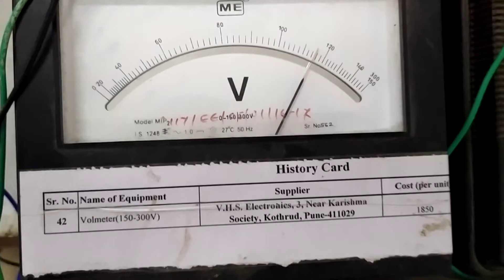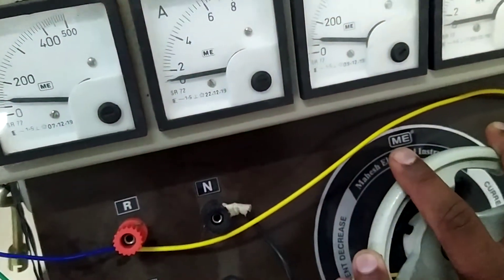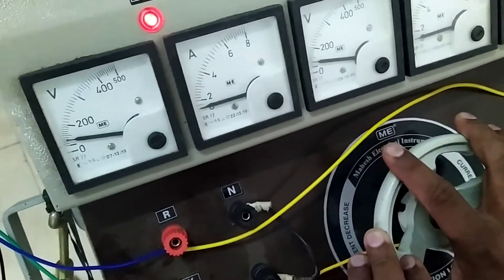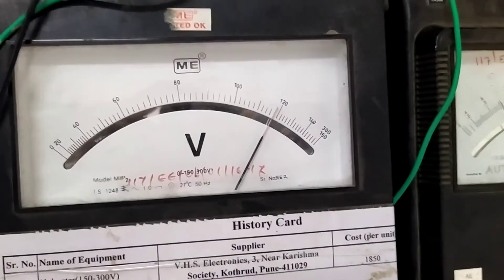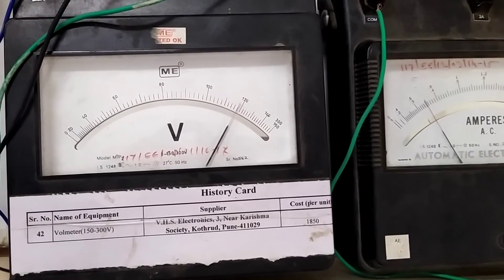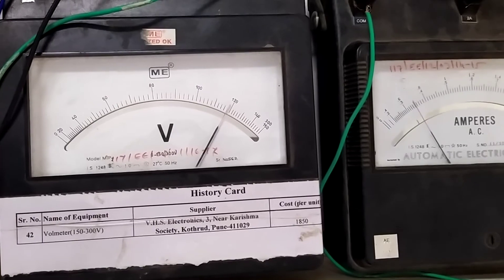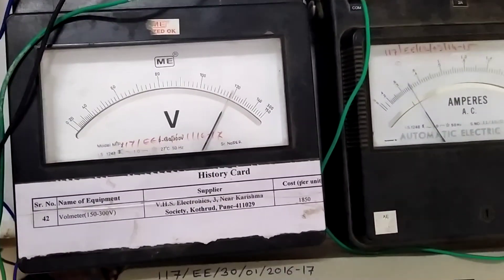First reading is current is at 0.4, terminal voltage is at 275. Here is the maximum reading of 0.8 ampere is the load current. Accordingly the terminal voltage is shown here 232 volt. And by decreasing now load current is 0.7, terminal voltage is 238.